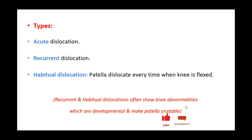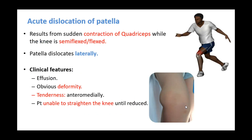Recurrent and habitual dislocations show developmental abnormalities that make the patella quite unstable. Acute dislocation results from sudden contraction of the quadriceps while the knee is flexed or semi-flexed — often seen in sports. The patella always dislocates laterally. Clinical features include joint effusion, obvious deformity with roundness on the lateral side, tenderness anteromedially due to stretching or rupture of the medial capsule, and the patient being unable to straighten the knee until it is reduced.